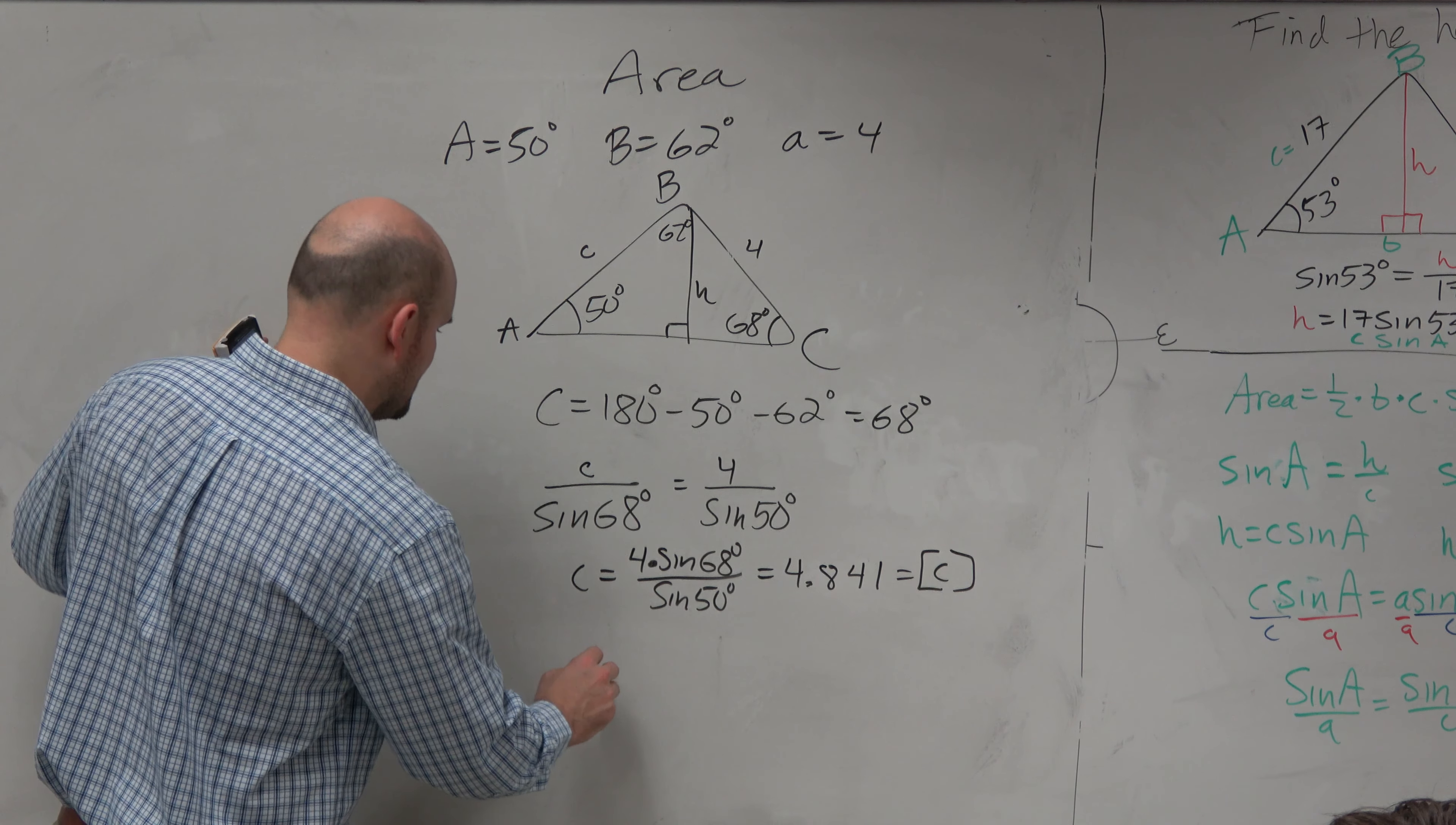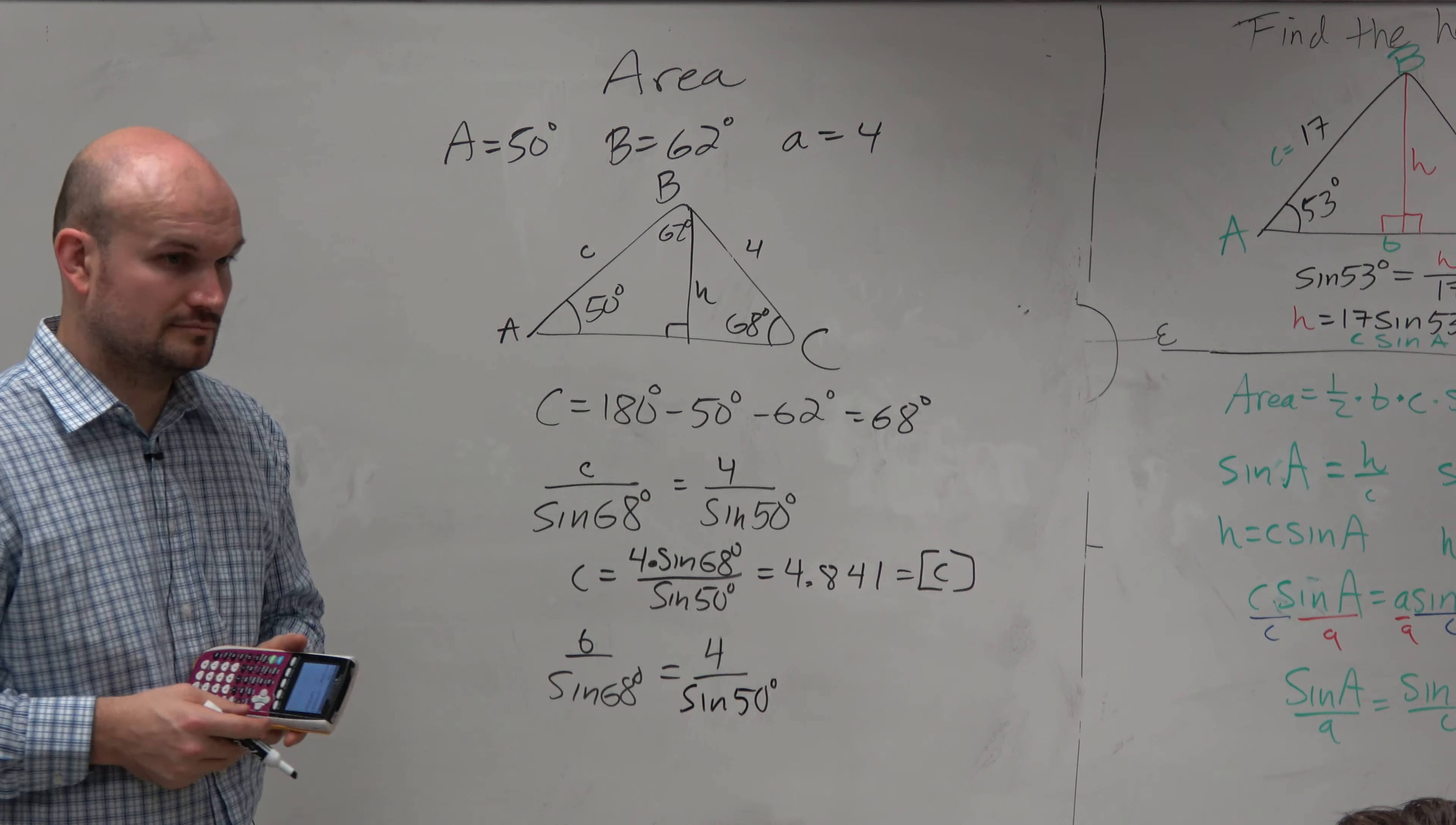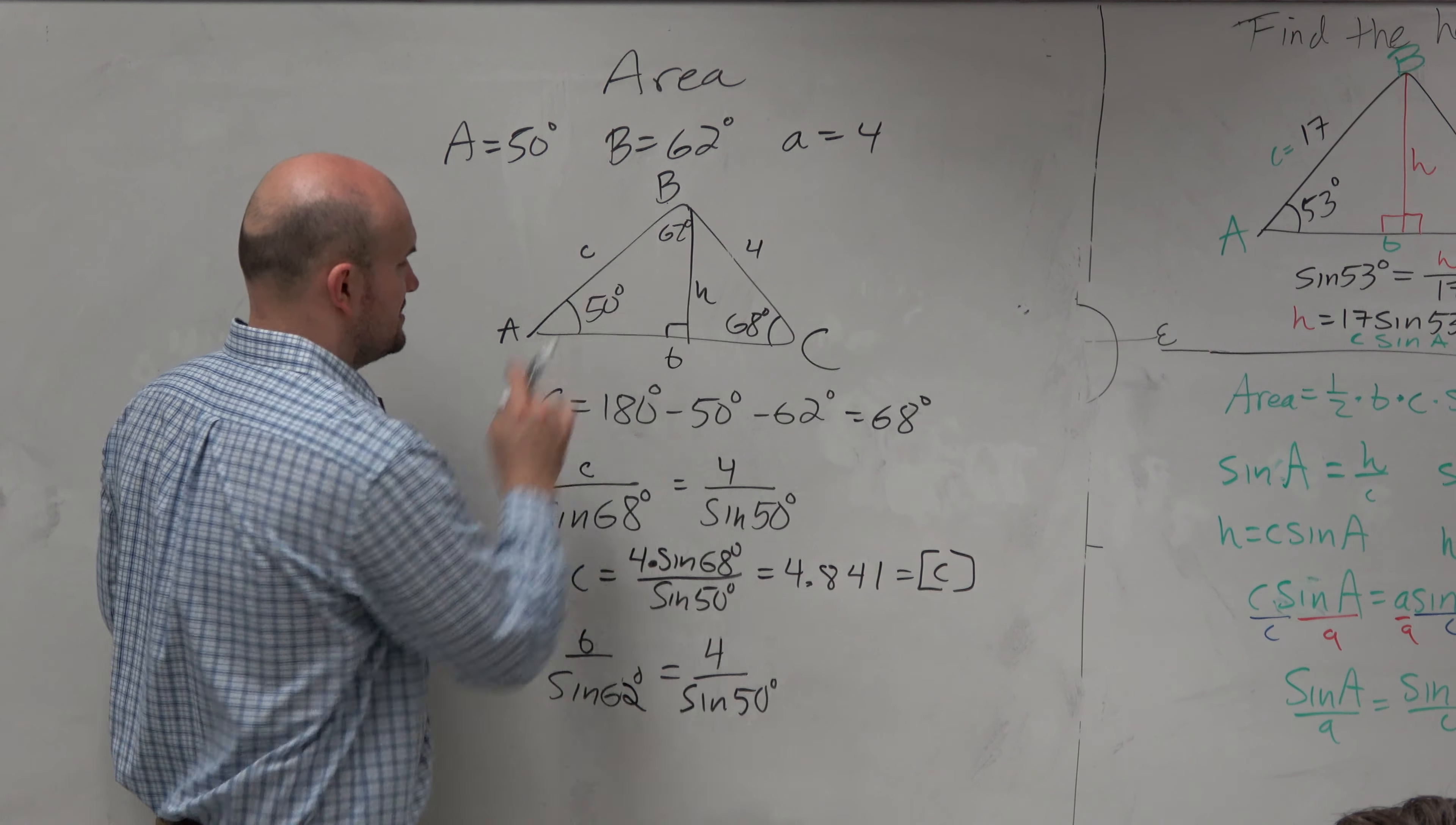So if I was going to do B, that's going to be B over the sine of 68 degrees equals, again, let's use the same ratio, 4 over sine of 50. Oh, it's 62 degrees. No, thank you. So it's B over 62.